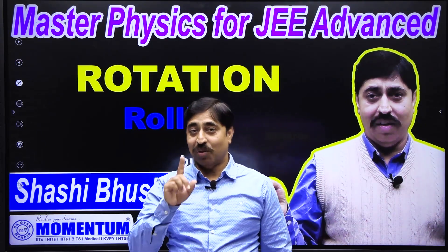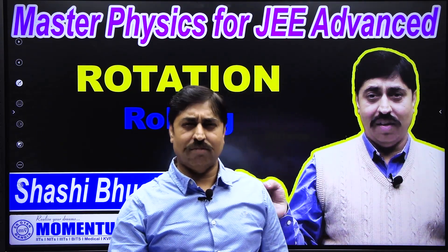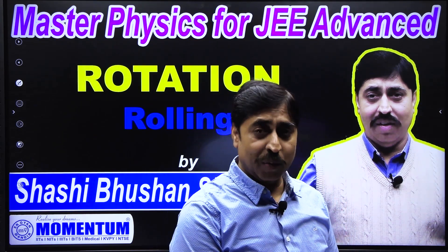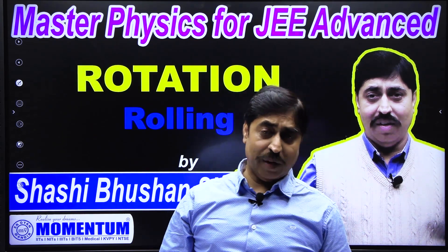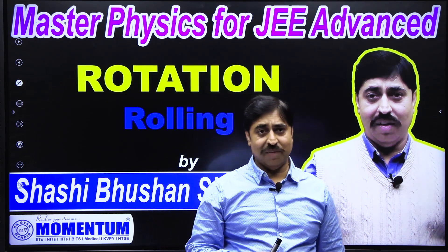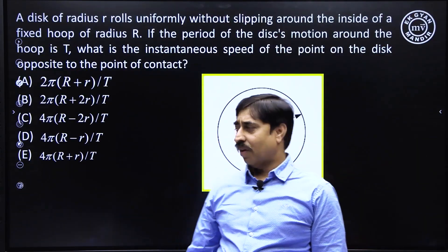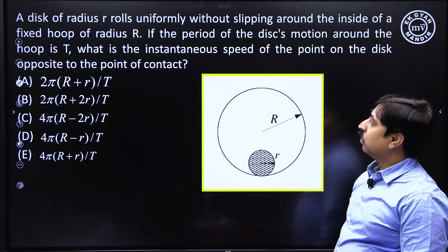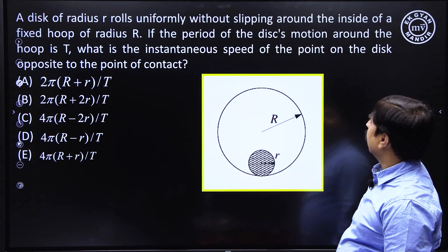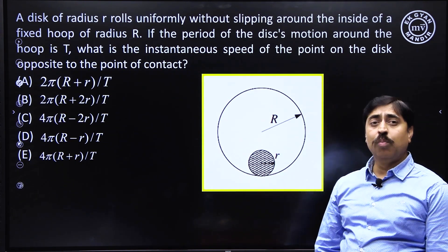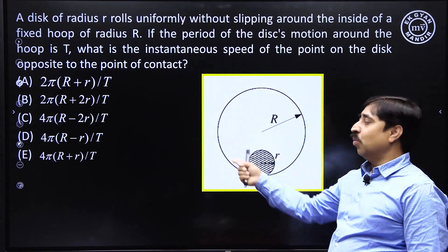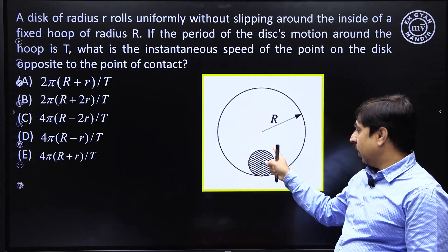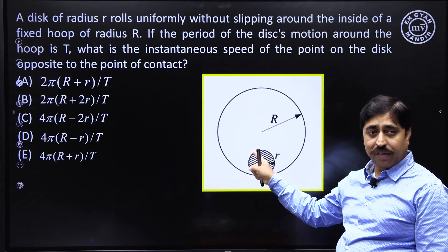Hello students. Let's do a relatively simple question on rolling kinematics and revise the concepts of rolling motion. A disk of radius small r rolls uniformly without slipping around the inside of a fixed hoop of radius R. This is a fixed hoop — hoop means ring. This is a ring of radius capital R and this is the disk of radius small r.